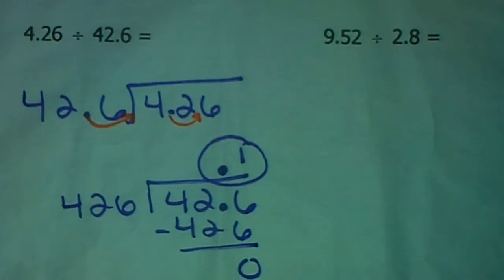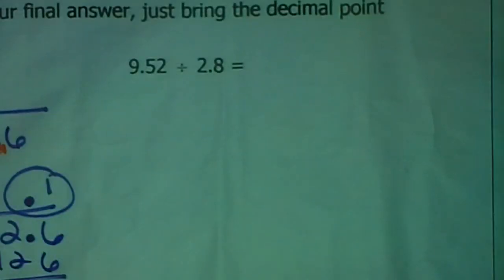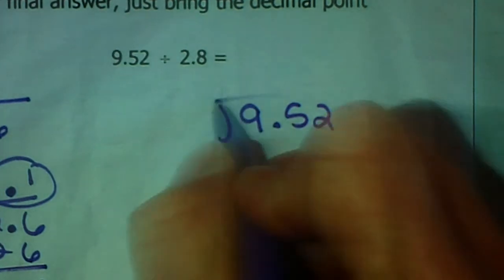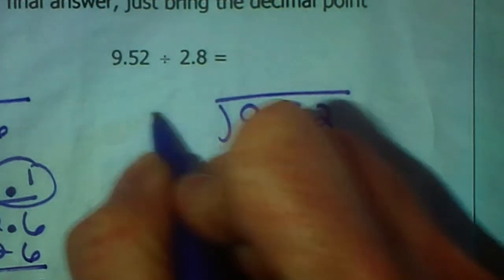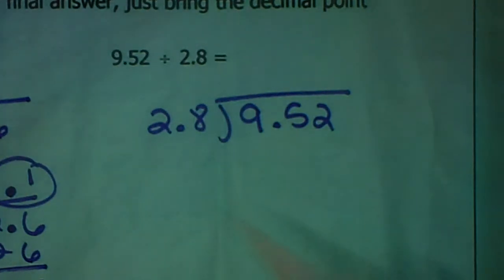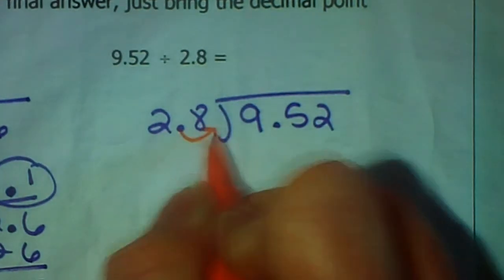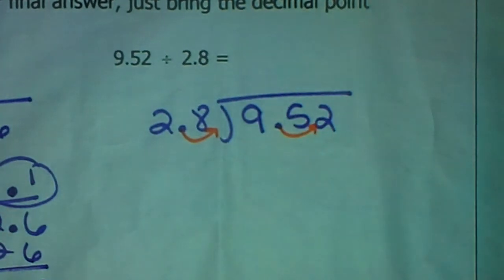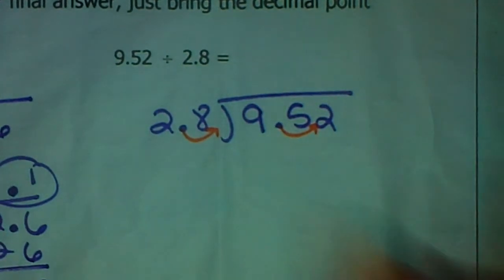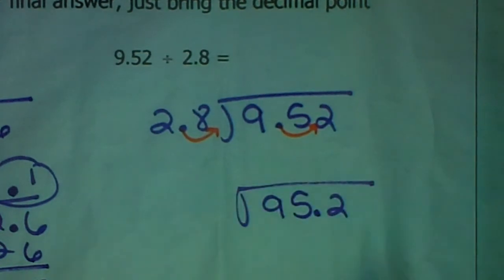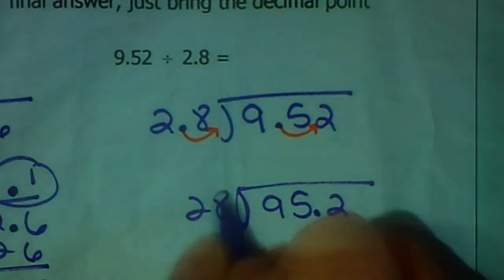All right, last one for division of decimals. Again, 9 and 52 hundredths goes on the inside. It's being divided by 2 and 8 tenths. That goes on the outside. And it looks like, again, we need to move this decimal point one place to the right. So we'll move that decimal point one place to the right. So my problem is actually 95 and 2 tenths divided by 28.